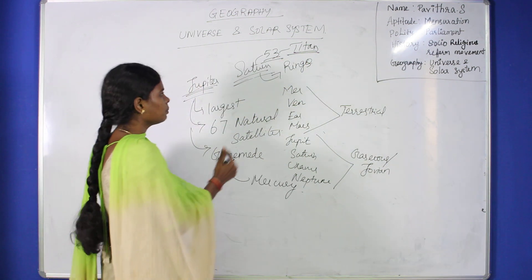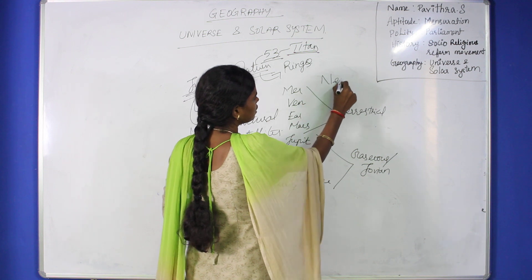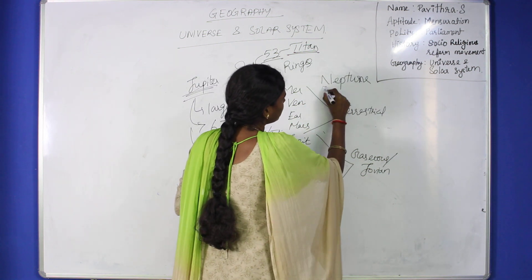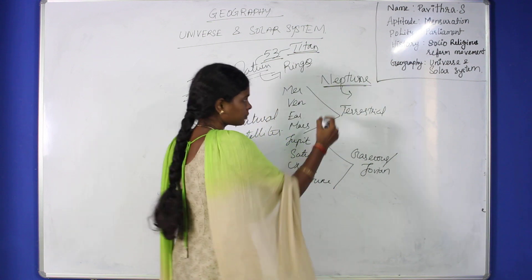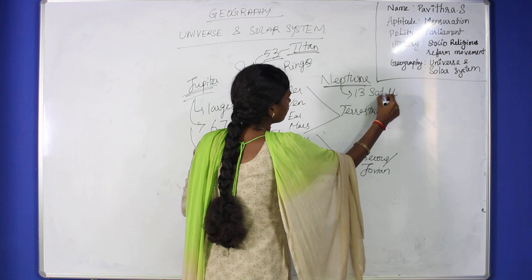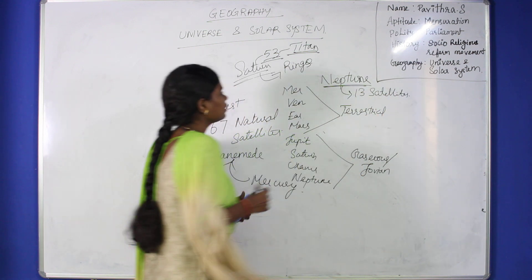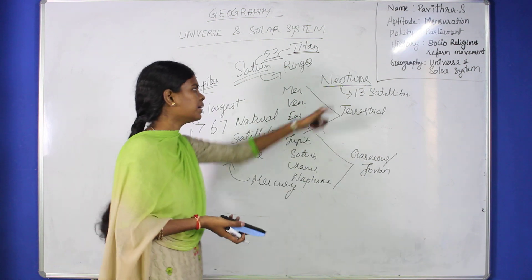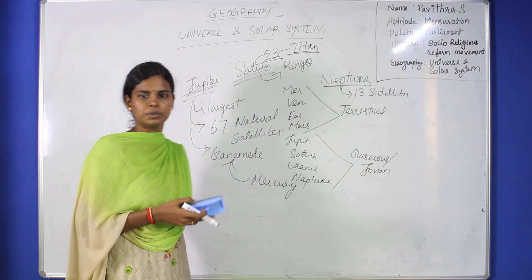Neptune is the smallest planet among the gaseous planets. Neptune has 13 satellites. Neptune is the farthest planet from the Sun in our solar system.